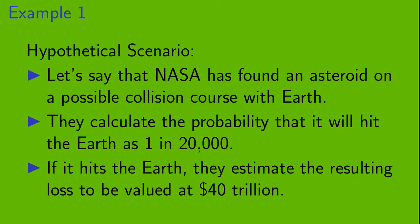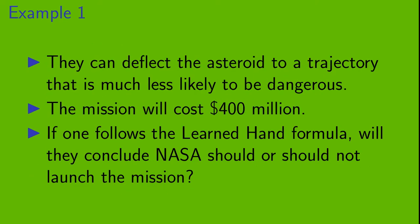Let's look at a couple of examples. Here's our first hypothetical scenario. Let's say that NASA has found an asteroid on a possible collision course with Earth. They calculate the probability that it will hit the Earth as 1 in 20,000. And if it hits the Earth, they estimate the resulting loss to be valued at 40 trillion dollars. Now, they can deflect the asteroid to a trajectory that is much less likely to be dangerous, but the mission will cost 400 million dollars. If one follows the Learned Hand Formula, will they conclude NASA should or should not launch the mission?